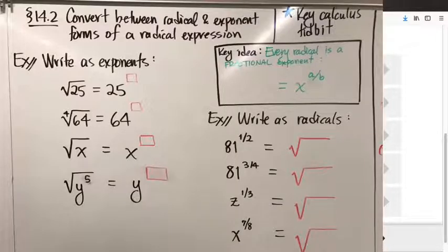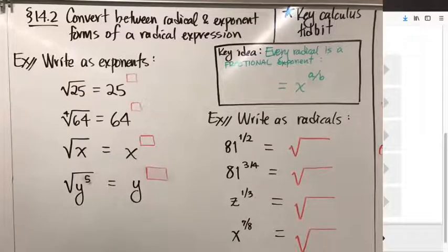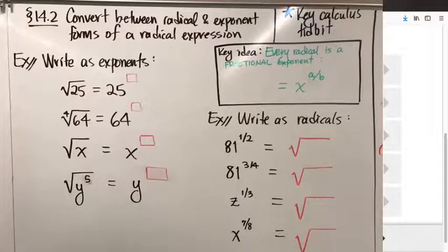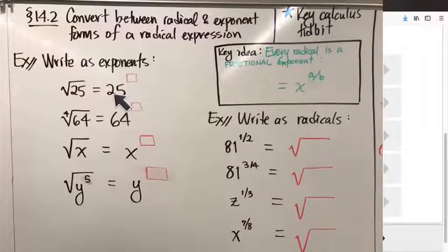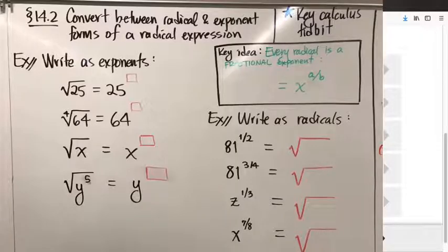The first thing we'll talk about is how to go in the direction of radicals to exponents. How do we think about a radical expression — whether it has a number underneath or a variable expression underneath — and rethink it in terms of an exponent instead? I want to start with the first example and unpack it in some detail: how do we think of the square root of 25 as 25 raised to some power?